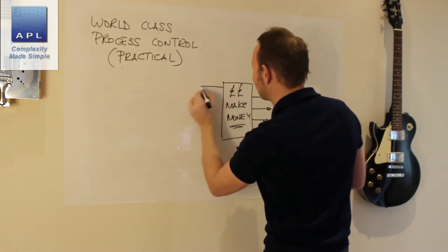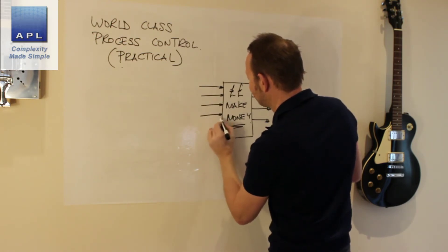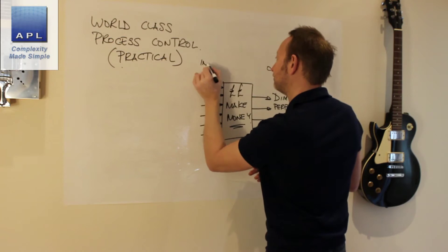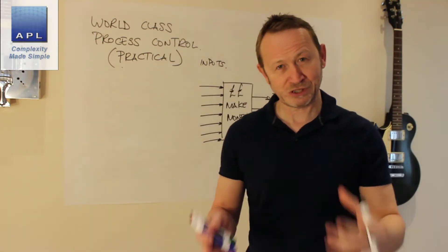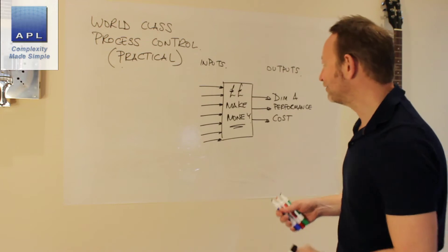Of course, over on this side of the diagram, we have lots and lots of inputs. Inputs over this side of the diagram. And what does world-class process control look like? Well, it's very straightforward.